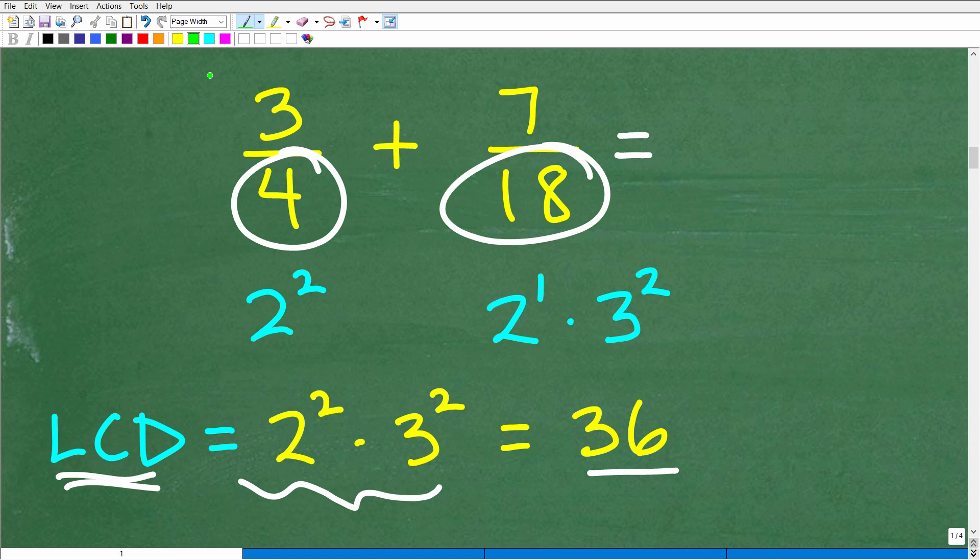I need to find the highest - I need to have the product of all my prime factors I have between my two denominators represented in my LCD. So here I have 2 squared, here I have 2 to the first. I need to take the highest power of 2. So which one do I take? Well, I take the highest power, that's 2 squared. And then I got to have this represented as well. So 2 squared is 4, 3 squared is 9, 4 times 9 is 36.